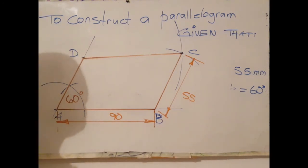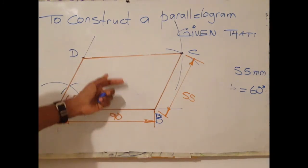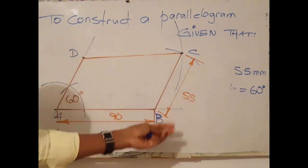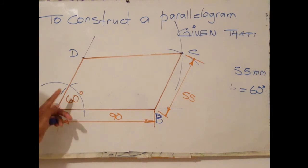And that's it - a parallelogram quadrilateral with adjacent sides 90 and 55, and an included angle of 60 degrees.